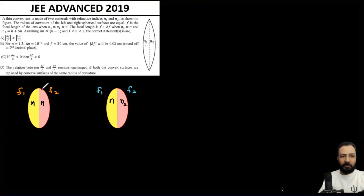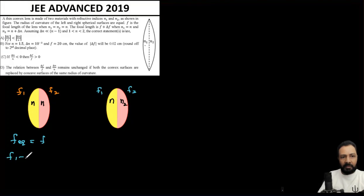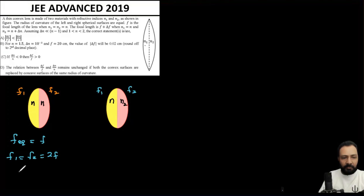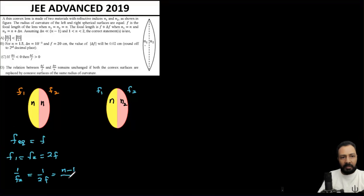Initially, this lens is made of two identical plano-convex halves, both with the same refractive index n, and accordingly the equivalent focal length is given as f. This means both parts have the same focal length, which must each be 2f — only then do you get the resultant focal length f. So for either half, 1/f2 equals 1/(2f), and since each part is a plano-convex lens, that gives (n minus 1)/R.